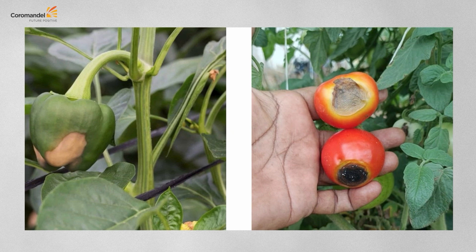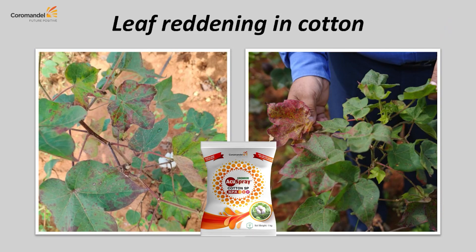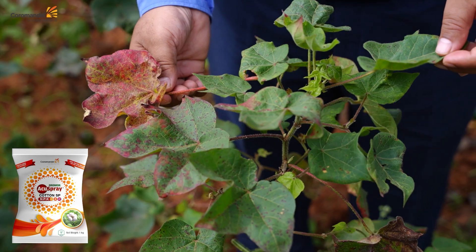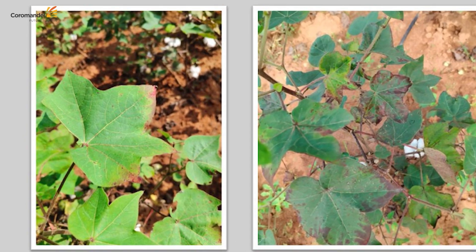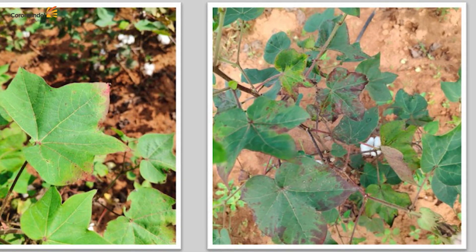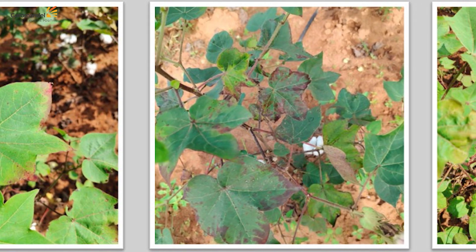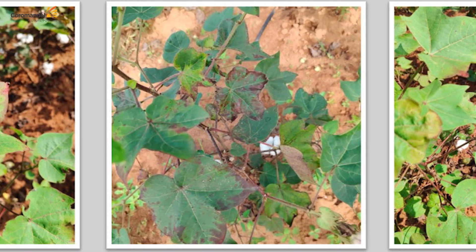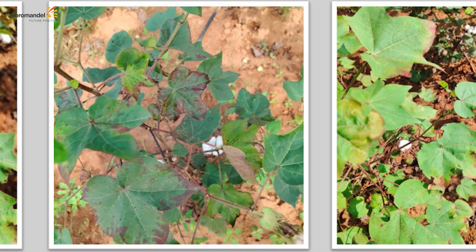Blossom end rot in tomato is often treated with fungicides due to confusion with fungal disease, but it is mainly caused by calcium deficiency. Apply calcium nitrate, calcium chloride, or chelated calcium to rectify it — it generally appears after two to three pickings of tomato. Reddening of cotton leaves — prominent in BT cotton and hybrid cotton — where reddening starts from the tip and spreads, is mostly due to magnesium deficiency, though sometimes mite infestation is also a cause.